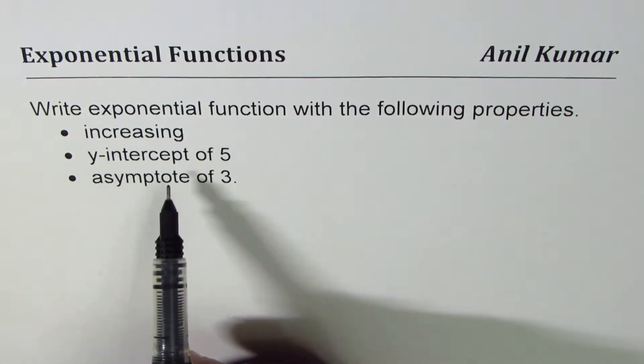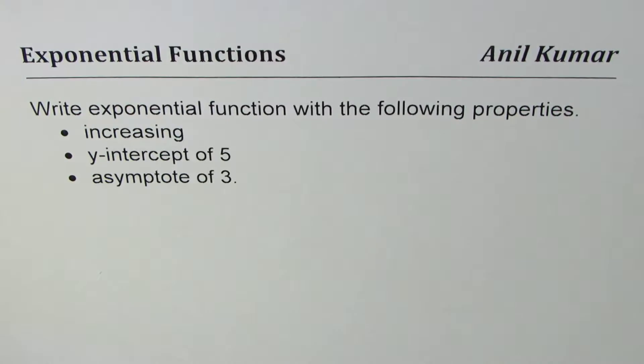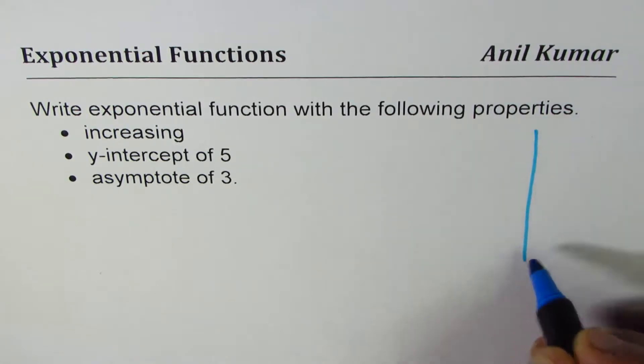Y-intercept of 5 and asymptote of 3. So whenever we say asymptote for exponential function, it really means horizontal asymptote.